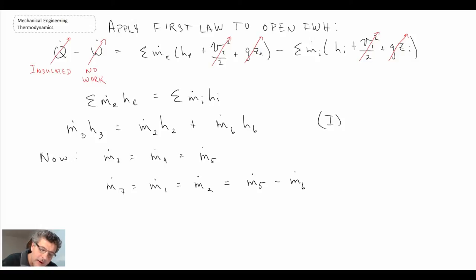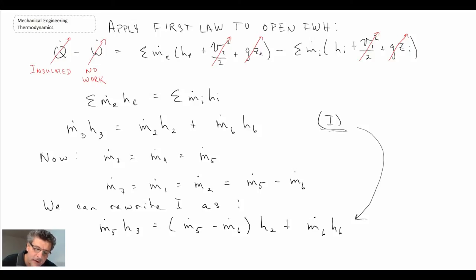And so with this, we can rewrite equation 1. So that's just rewriting equation 1 that we had up here. So that's coming down and making the substitutions for the mass flow rate. Now what we'll do is we're going to divide this equation by the mass flow rate at 5. So let's take a look at what happens when we do that.